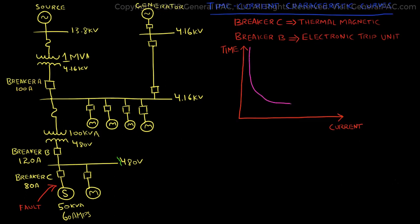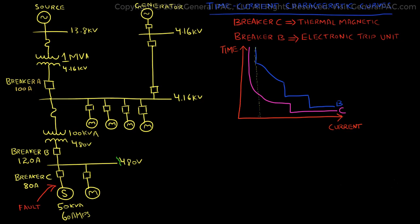We will now plot the curves of breaker B and breaker C on the same axis. As was established previously, breaker B picks up at a higher amp value, while breaker C picks up at a lower amp value. This results in a shift between the curves and allows coordination.